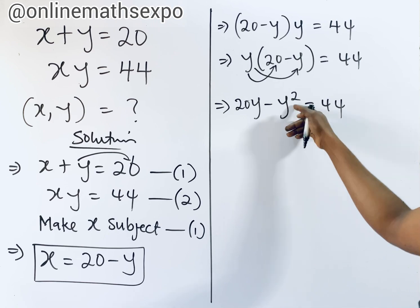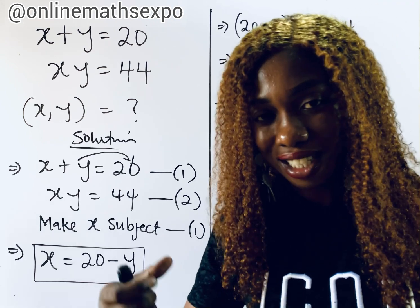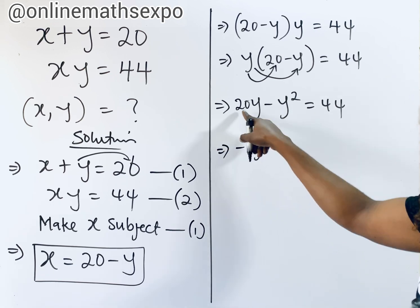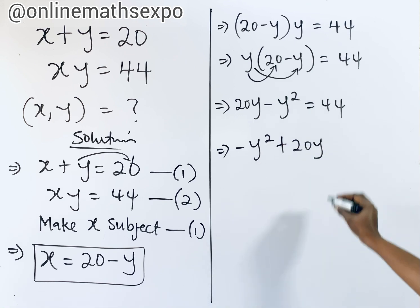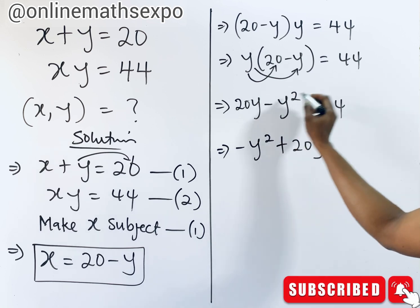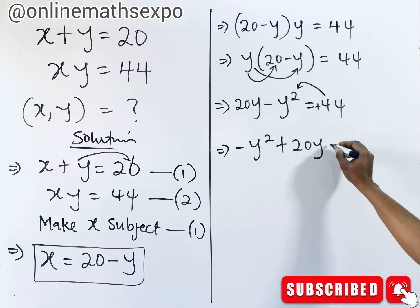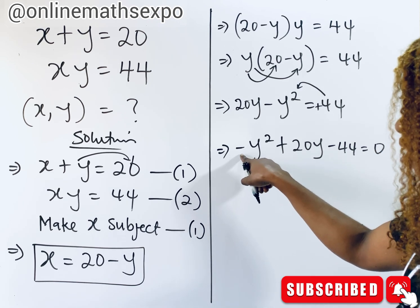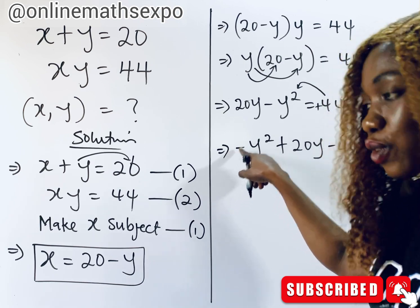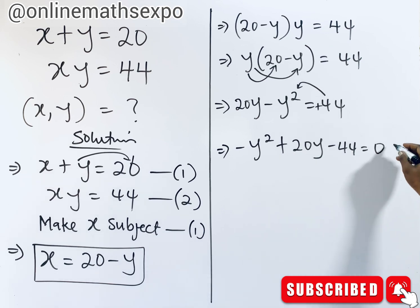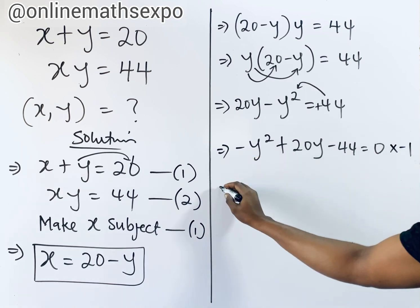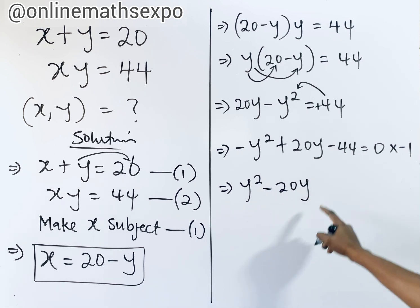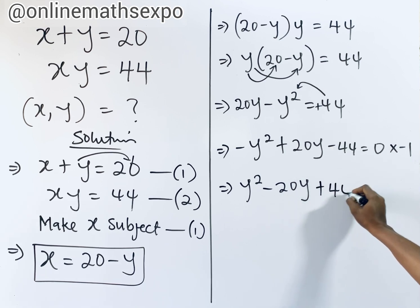You observe that the highest power of y is 2, leading us to a quadratic equation. Collecting terms: negative y squared plus 20y equals 44. Subtracting 44 from both sides gives negative y squared plus 20y minus 44 equals zero. To remove the negative sign, multiply the entire equation by negative 1, giving us y squared minus 20y plus 44 equals zero.